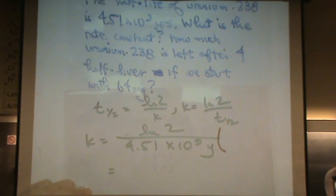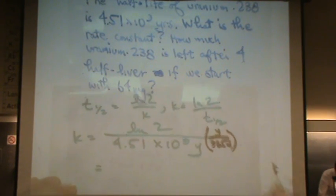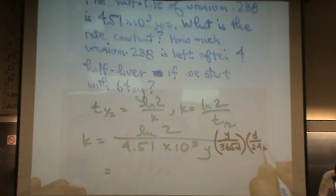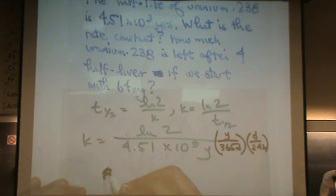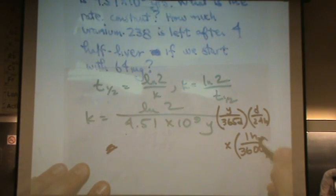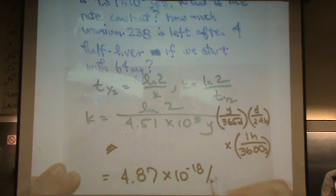If I wanted to convert this to seconds, one year is 365 days. You have to know that all by yourself. And then you've got a day, that's 24 hours. And I'm also going to multiply, we've got one hour is 3600 seconds. So I'm multiplying by all three of these things in the black parenthesis here. K per seconds is 4.87 times 10 to the minus 18 per second.